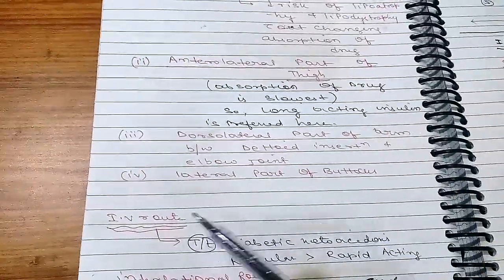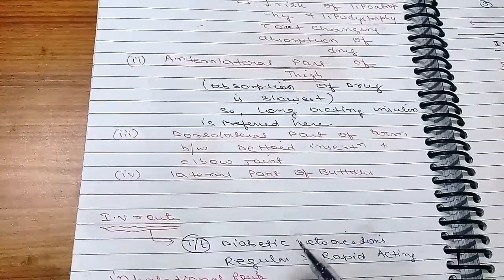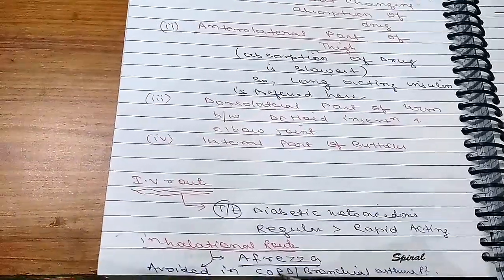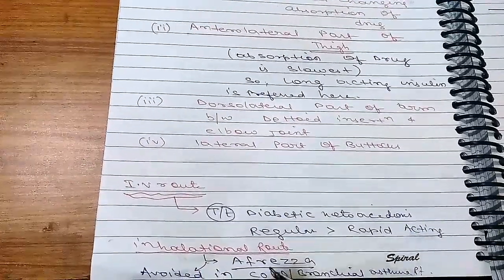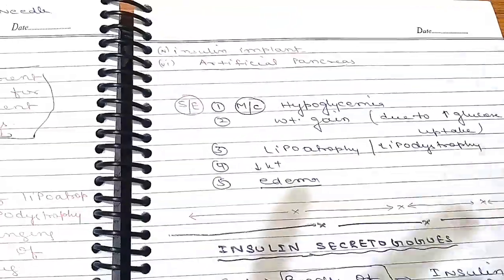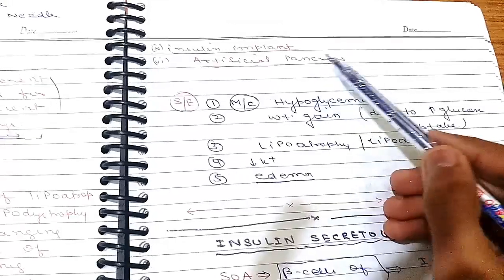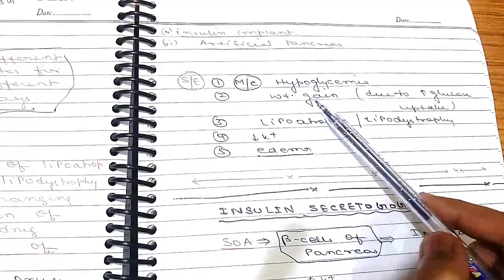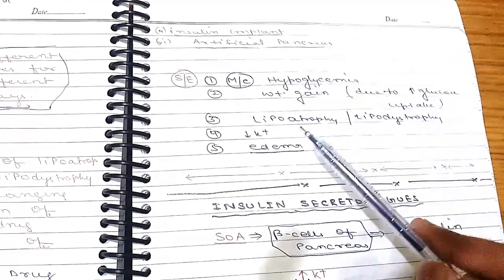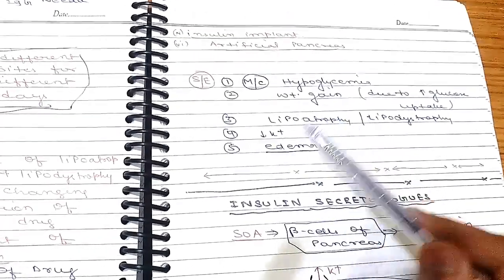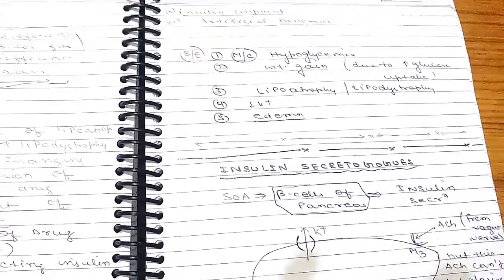IV route is only used for treatment of diabetic ketoacidosis. Some insulins are available for inhalation route (e.g., Afrezza) but are avoided in COPD and bronchial asthma. Insulin implants and artificial pancreas are also available. Side effects of insulin: most commonly hypoglycemia; also weight gain (due to increased glucose uptake), lipotrophy, lipodystrophy, decreased potassium, and edema.